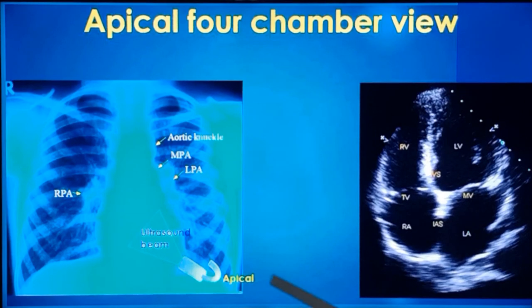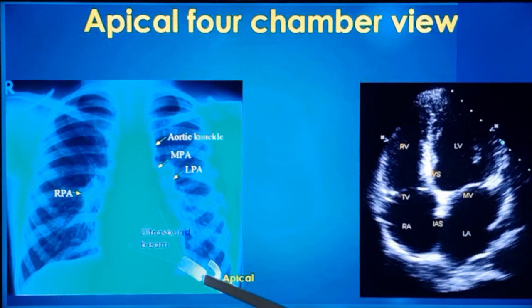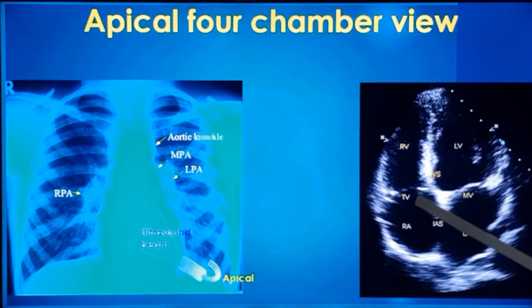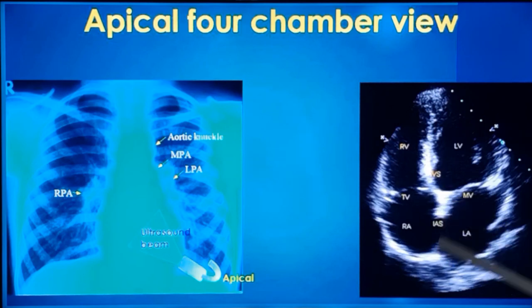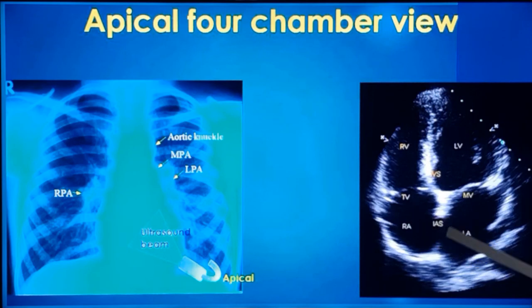This is the apical four chamber view. The transducer is kept at the apex and the beam is directed upwards, cutting the heart in four chambers. It is just like the box-like description that the lay public also knows, except that it is inverted. The transducer is kept lower down, so the apex is here, right ventricle comes here, left ventricle here, interventricular septum, tricuspid valve, mitral valve, left atrium, interatrial septum and right atrium. The interatrial septum is not well imaged here because any structure parallel to the beam will not be well imaged. In the region of the fossa ovalis this is known as echo dropout. Most often this is a false echo dropout and you should not diagnose an atrial septal defect by seeing this in the apical four chamber view — you have to look at the subcostal view.